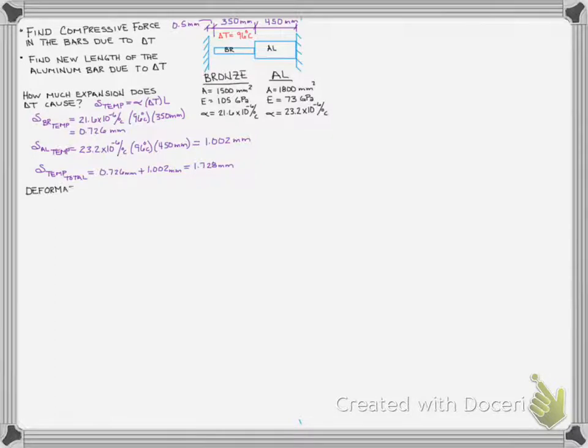But not all of that deformation is going to cause a force. Some of that deformation, the bar is free to undergo. And we've established if a bar is free to expand, no force or stress develops. So the actual deformation that will cause a force has to be that deformation the wall has to resist, which would be the total deformation due to temperature minus the gap, or our 1.728 millimeters minus 0.5 millimeters the gap, which turns out to be 1.228.